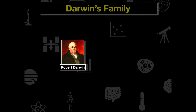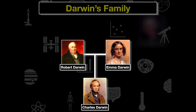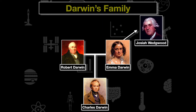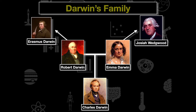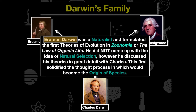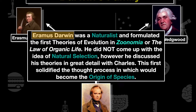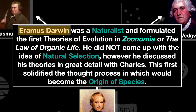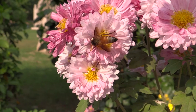Looking at Darwin's family: his father is Robert Darwin and his mother is Emma Darwin. On his mother's side they're from the famous Wedgwood family — a wealthy family known for creating pottery, the Wedgwood and Sons pottery company. On Darwin's father's side, we have Erasmus Darwin, a famous scholar and naturalist who formulated early theories of evolution in books called Zoonomia and The Law of Organic Life. Erasmus did not come up with natural selection — that was Darwin's own contribution — but he discussed his evolutionary theories with Charles as a child, which solidified the thinking that would become the Origin of Species.